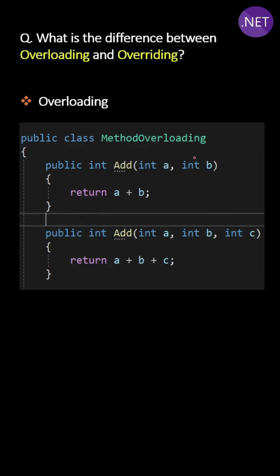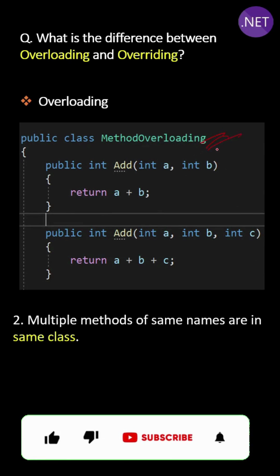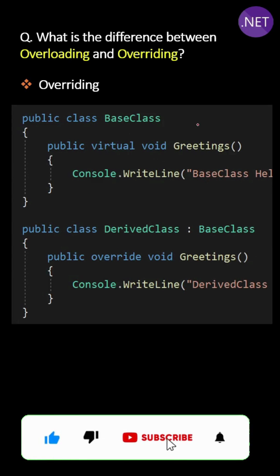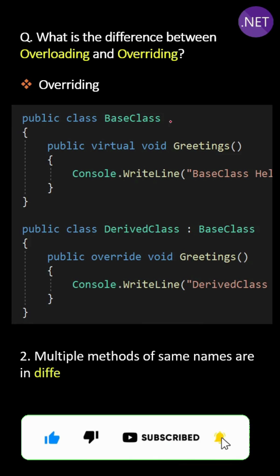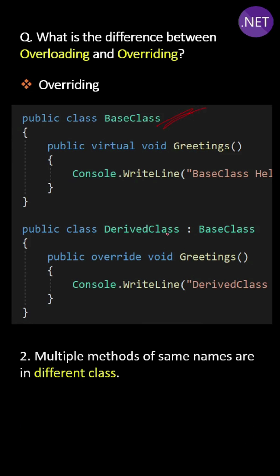The second difference is: in overloading, multiple methods of the same name are in the same class — we have only one class. But in the case of overriding, multiple methods of the same name are in different classes — we have two different classes here.